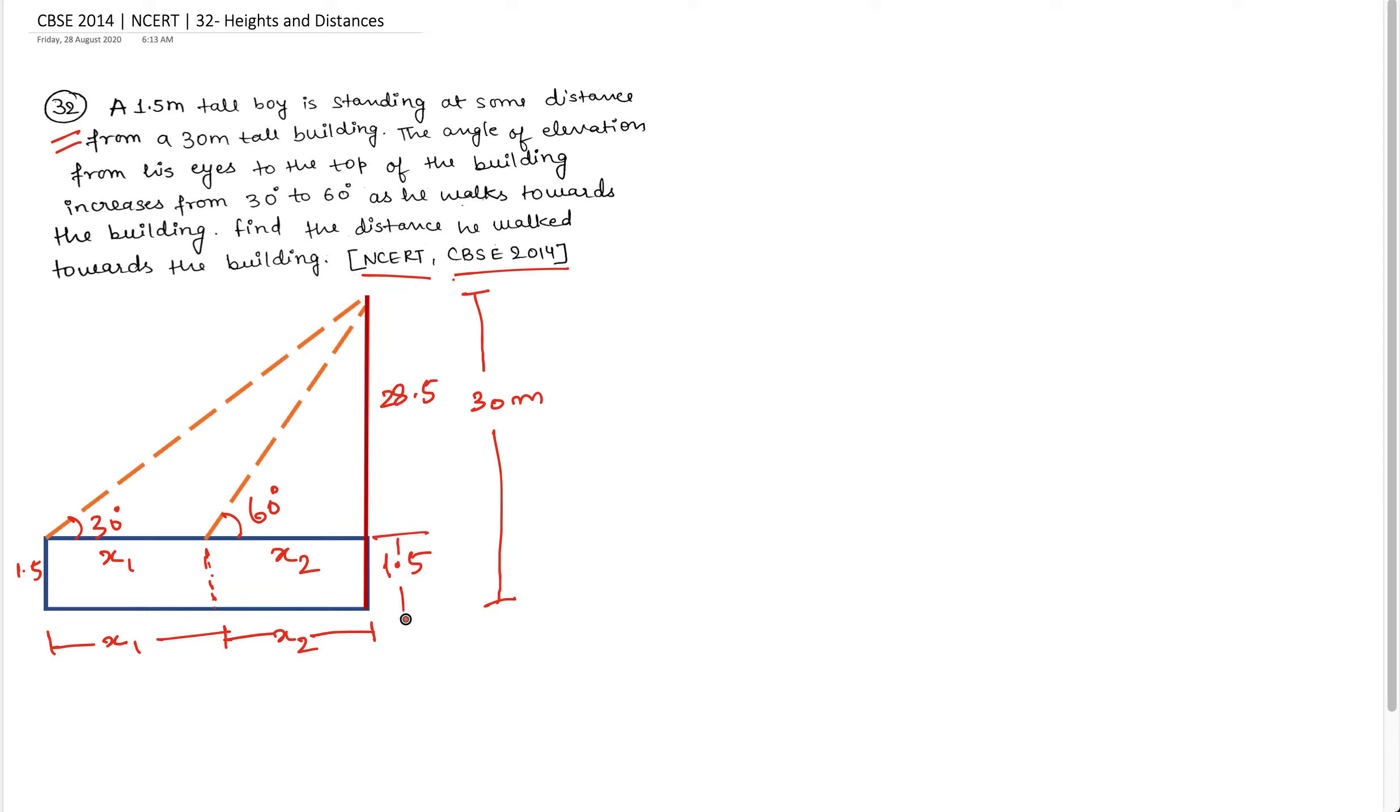So this distance is 1.5 meters. And this distance is 28.5 meters. Now I will name this triangle A, B, C and this point is D.